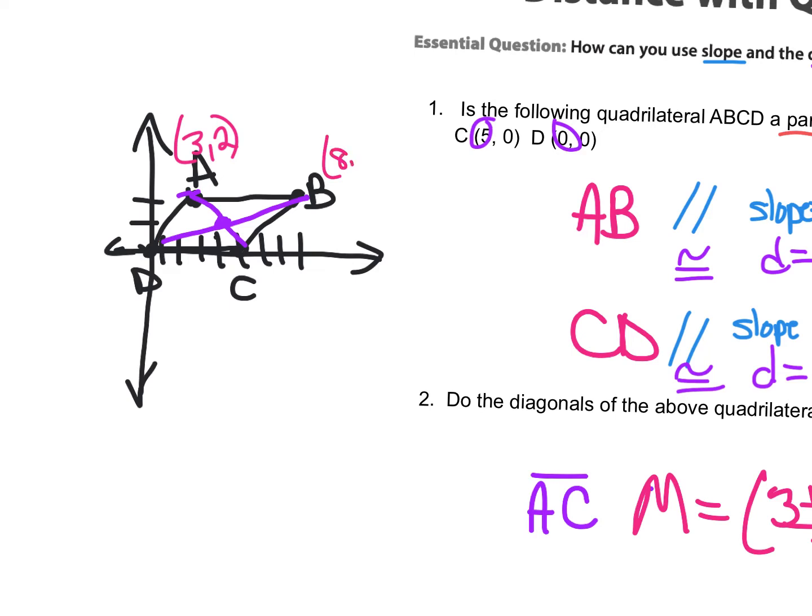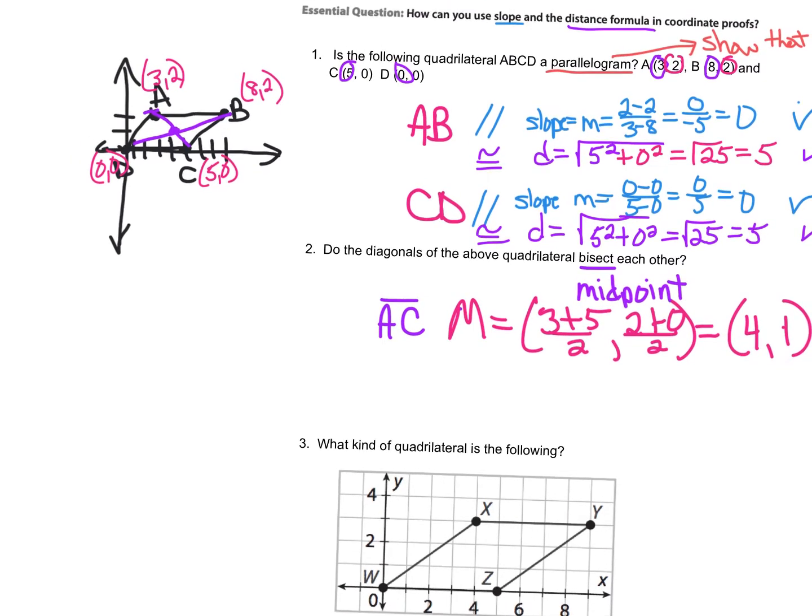And if I wrote these points here, sometimes it's easier to see. A is 3, 2. B is at 8, 2. C is at 5, 0. And D is at 0, 0. So what I'm doing, midpoint of AC. Right here, that X and that X, add them together, divide by 2. And then that Y and that Y, add them together and divide by 2. And now we're going to do BD. So BD, the midpoint, add the X's together, 8 and 0. Add the Y's together. And I get 4, 1.